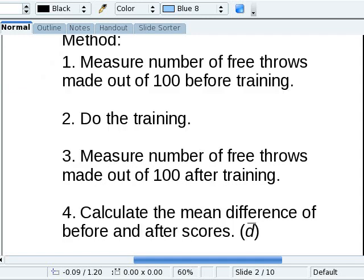In our method, we're going to take the people, we're going to measure how many free throws they make out of 100 before we train them. Then we're going to give them the visualization training and measure how many they make afterwards. For each person, we're going to subtract the after score minus the before score to figure out what the improvement is, and then get the mean for all of those differences for all of our participants.